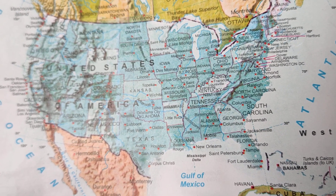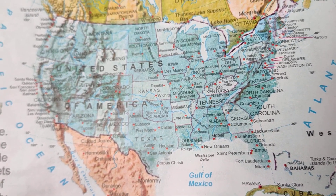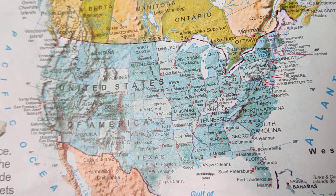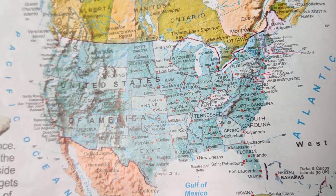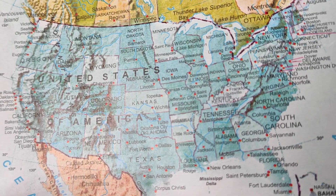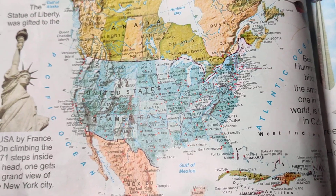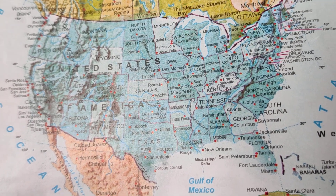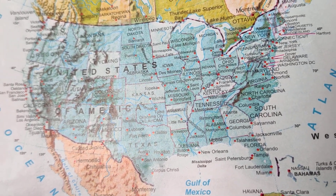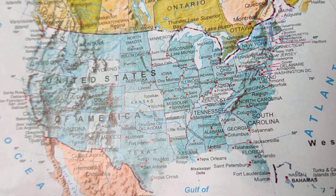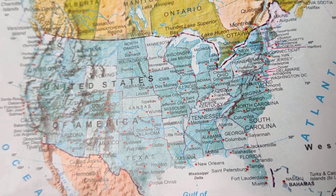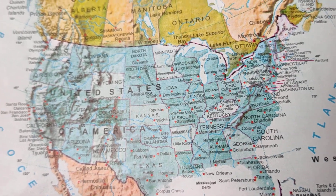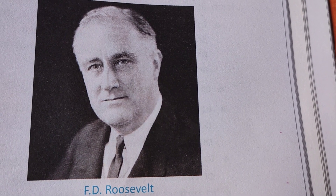The League failed, but the idea of the League did not die. You can see on the screen the political map of the United States of America. In 1941, remember, World War Two was still continuing.